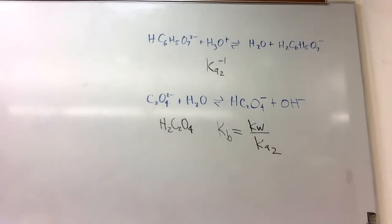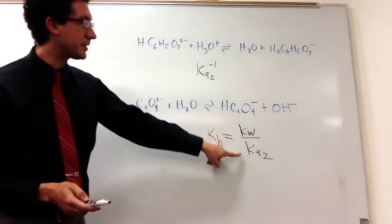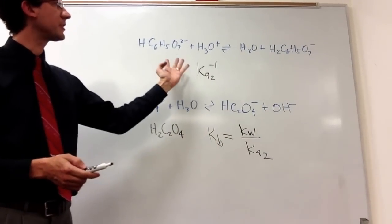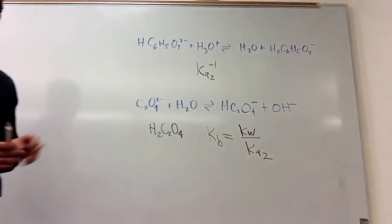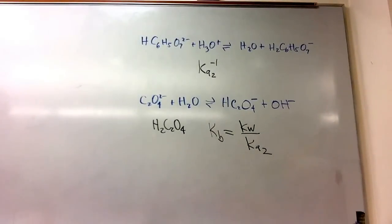So it's, the forward reaction is a KB, which is KW over KA2. This one is kind of similar, it's over KA2, but it's just the reverse of an acid, so we don't need KW or anything like that. Yeah? Okay, well, why did you say, oh, because it's over under KW? Okay.